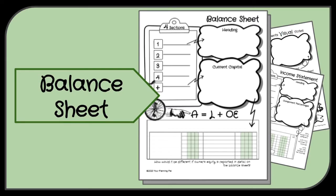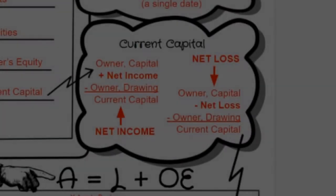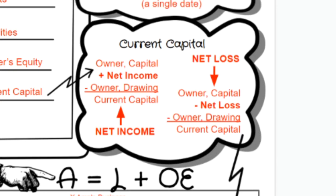Lastly, we have page three, all about the balance sheet. Just like the income statement, the balance sheet has four sections: the heading, assets, liabilities, and owner's equity, plus a bonus section on current capital. The heading includes the business name, document name, and a single date — not a period range. Current capital takes into account net income or loss and owner drawing: you take the owner capital account balance, add net income, subtract owner drawing, and get current capital.